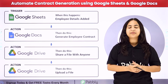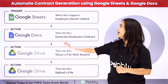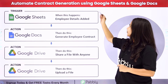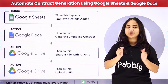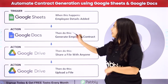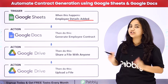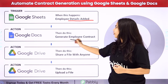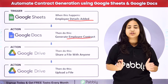Hello everyone, welcome back to Pabbly. Today in this video, we are going to see how to automate contract generation using Google Sheets and Google Docs. My objective is that whenever employee details are added into my Google Sheets, then automatically an employee contract would be generated in my Google Docs.